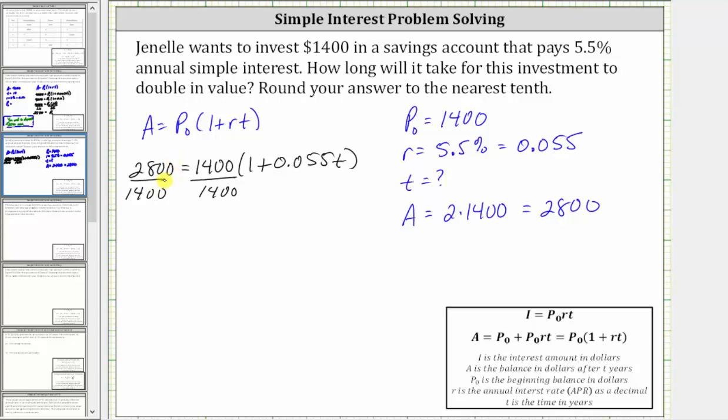Notice on the left, 2,800 divided by 1,400 is two. On the right, 1,400 divided by itself simplifies to one. The right side is now just one plus 0.055 T.